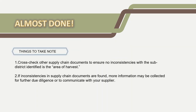Last but not least, cross-check other supply chain documents to ensure no inconsistencies with the sub-district identified as the area of harvest. If inconsistencies in supply chain documents are found, more information may be collected for further due diligence or to communicate with your supplier.